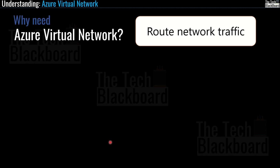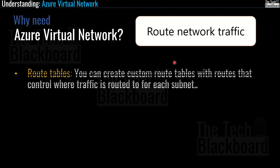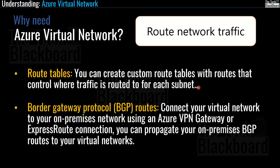Let's understand how virtual networks help route network traffic. First, you can create custom route tables with routes that control where traffic is routed for each subnet. Additionally, Border Gateway Protocol (BGP) routes let you connect your virtual networks to your on-premises network using an Azure VPN gateway or ExpressRoute connection, and you can propagate your on-premises BGP routes to your virtual networks.